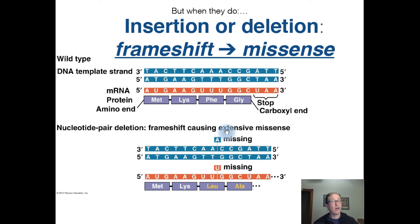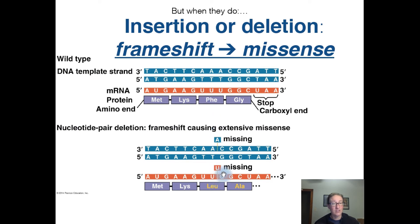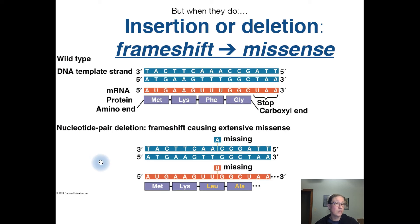A frameshift mutation can also lead to a missense mutation. In this example, an A has been removed. Now the third codon codes for a different amino acid. But beyond that, it doesn't just change a single amino acid — it shifts the reading frame for every single amino acid downstream of that point. Instead of having glycine at the end, we now have alanine, and in this case there's no longer a stop codon, so this produces a completely different protein.